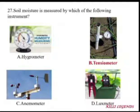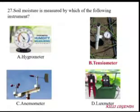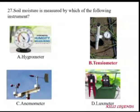Soil water matrix potential is measured by a tensiometer. When placed in the soil, it shows the reading in bars, from which we can interpret soil moisture content. Hygrometer is used for humidity measurement. Hydrometer is also used for humidity measurement.